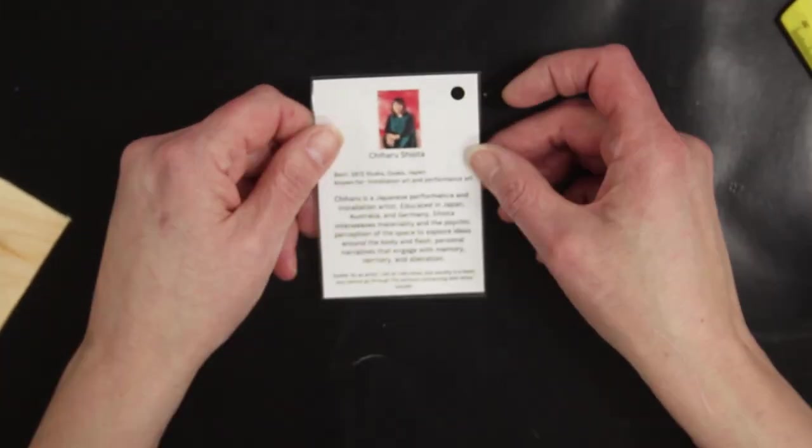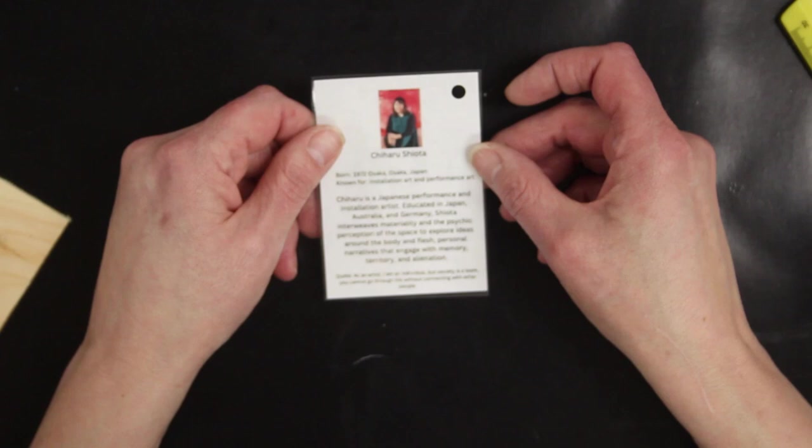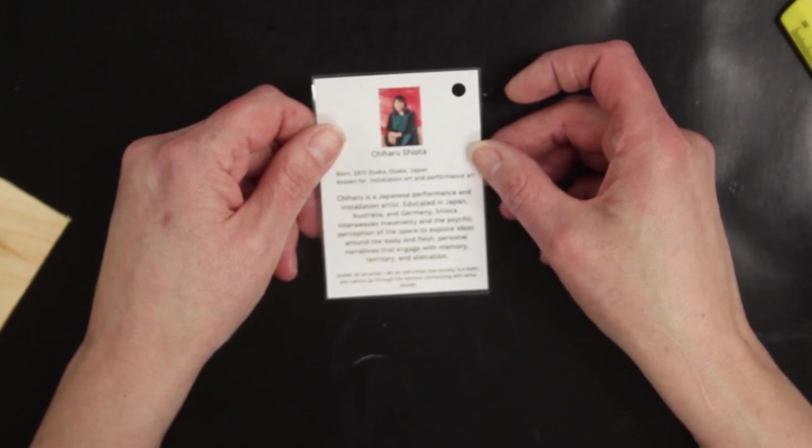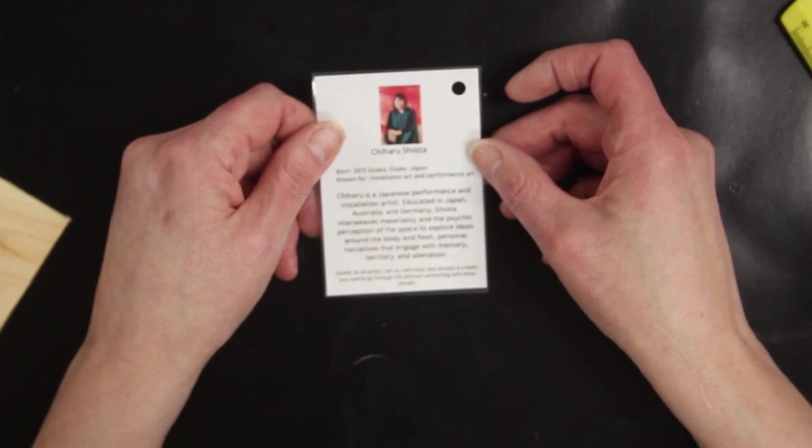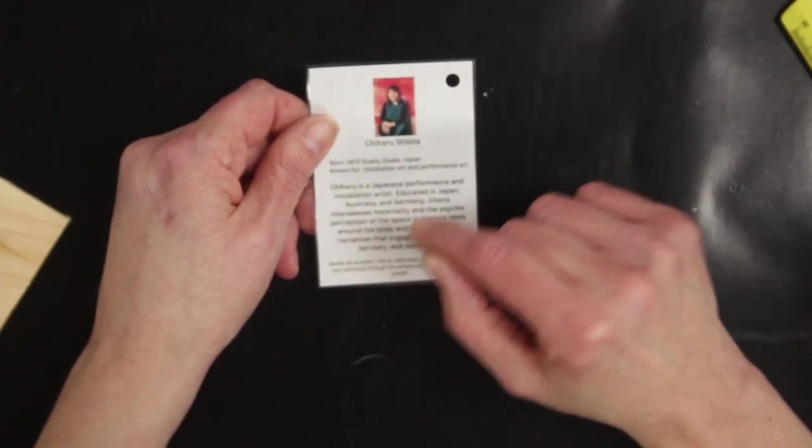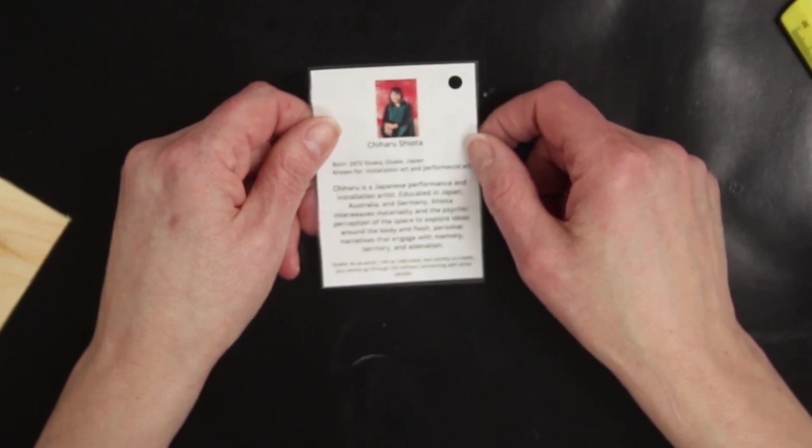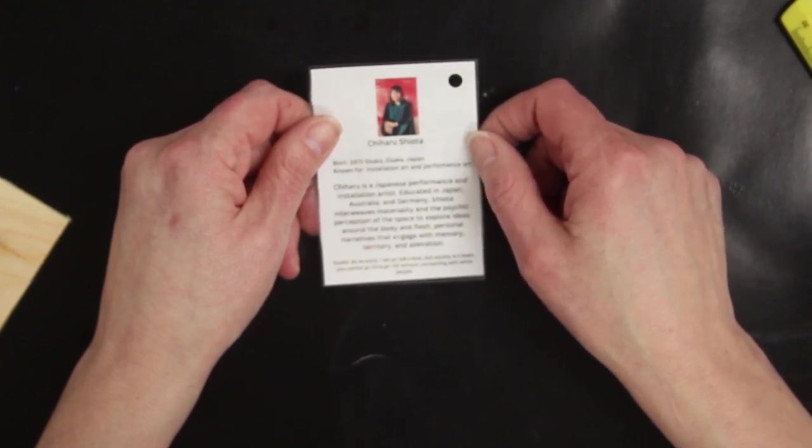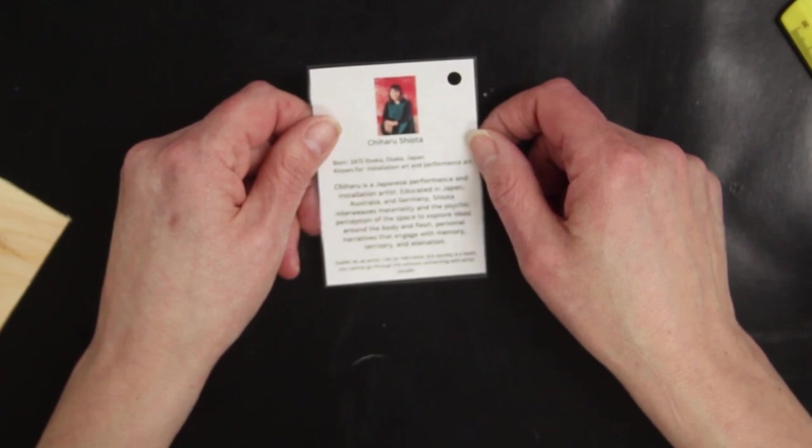But first, let's go over your artist. This month, Chiharu Shiota is a Japanese performance and installation artist. Educated in Japan, Australia, and Germany, Shiota interweaves materiality and the psychic perception of space to explore ideas around the body and flesh, personal narratives that engage with memory, territory, and alienation.